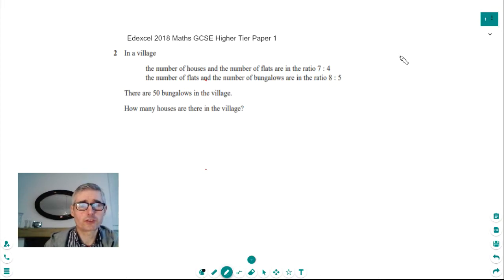This is question 2 and it's saying that in a village the number of houses and the number of flats is in the ratio 7 to 4 and the number of flats and the number of bungalows is in the ratio 8 to 5. Given that we've got 50 bungalows in the village, we've got to work out how many houses there are in the village.